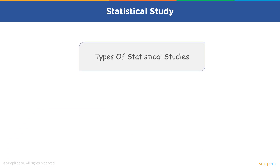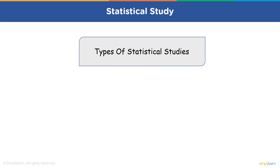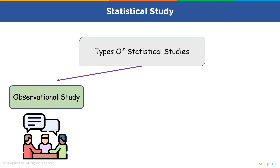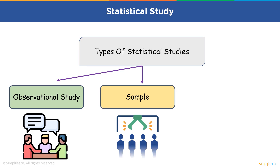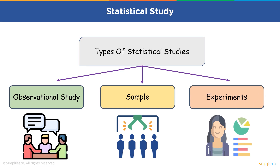There are mainly three types of statistical studies. The first one is observational study. The second one is sample. And the third are the experiments. Let's discuss each one of them in detail.